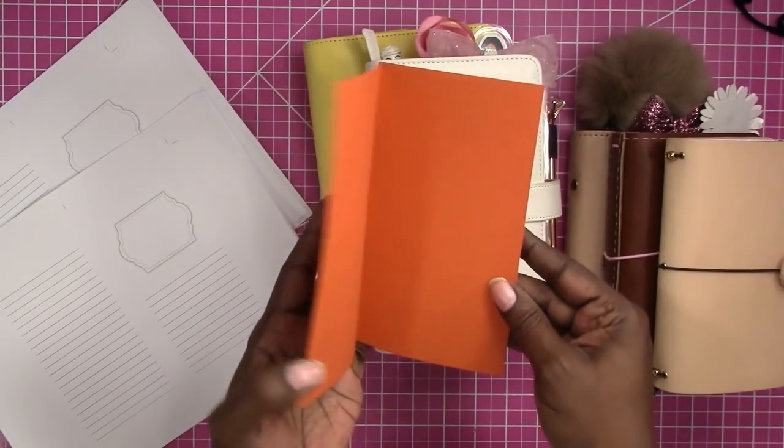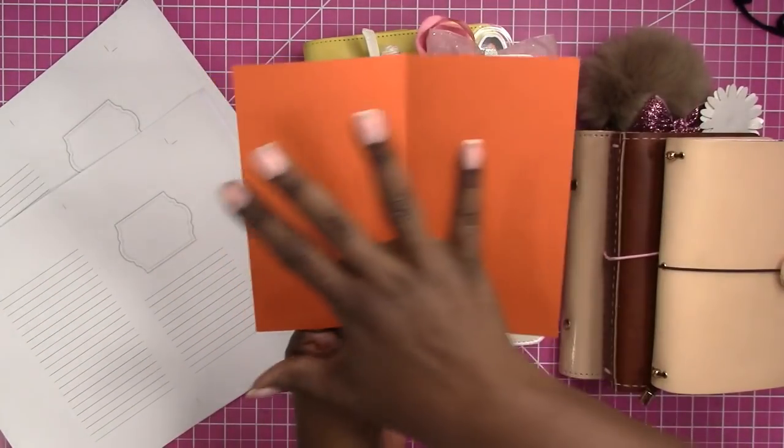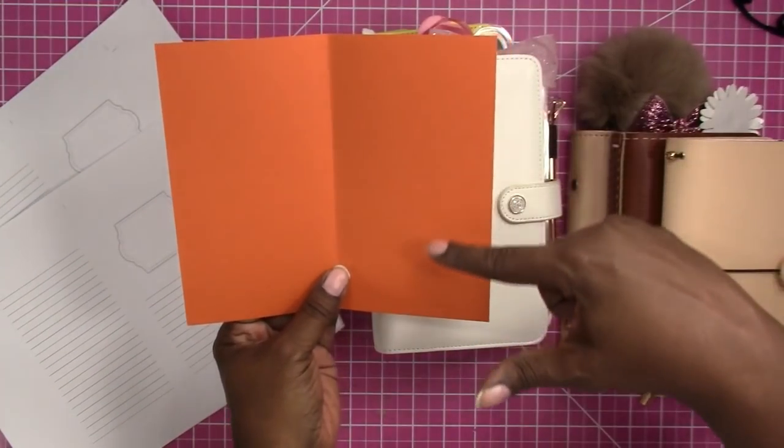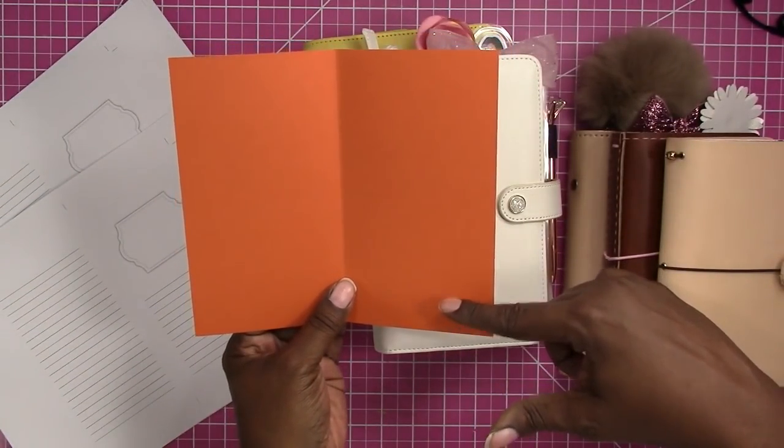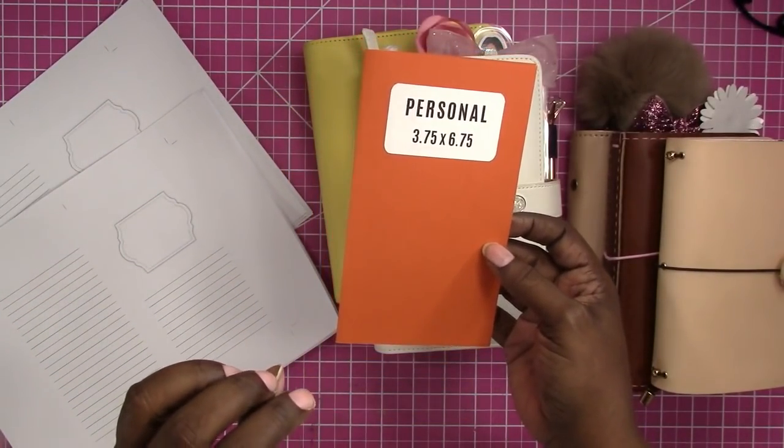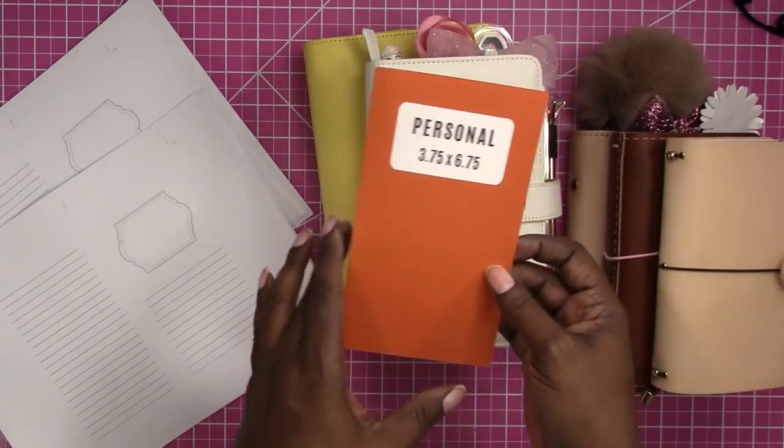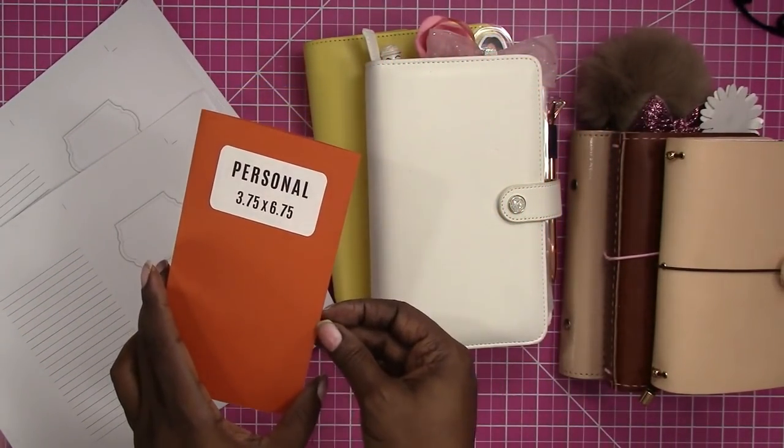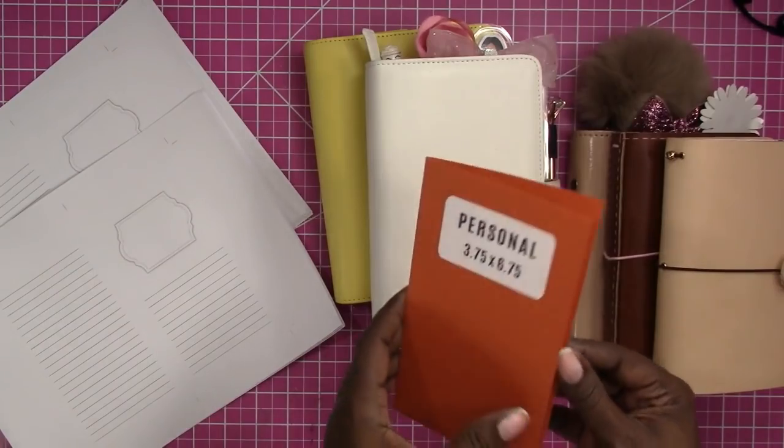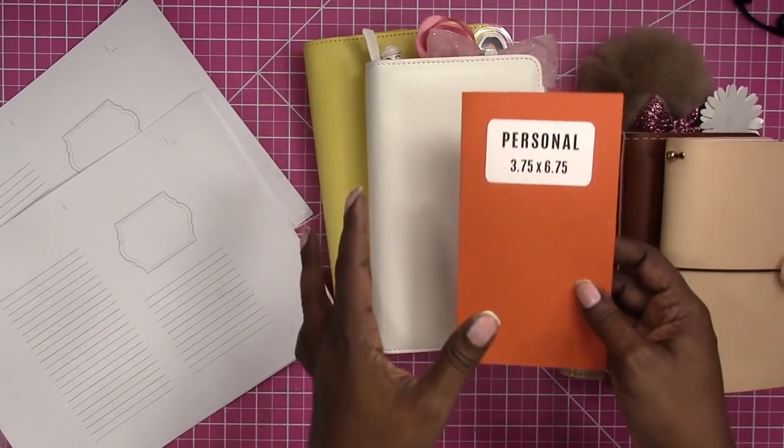For traveler's notebook purposes, the open size or the spread size is seven and a half inches wide by six and three-quarter inches tall. This is one of the size inserts that is standard for traveler's notebook and six ring binders. If you have inserts with the proper margins they can work in both style binding systems.